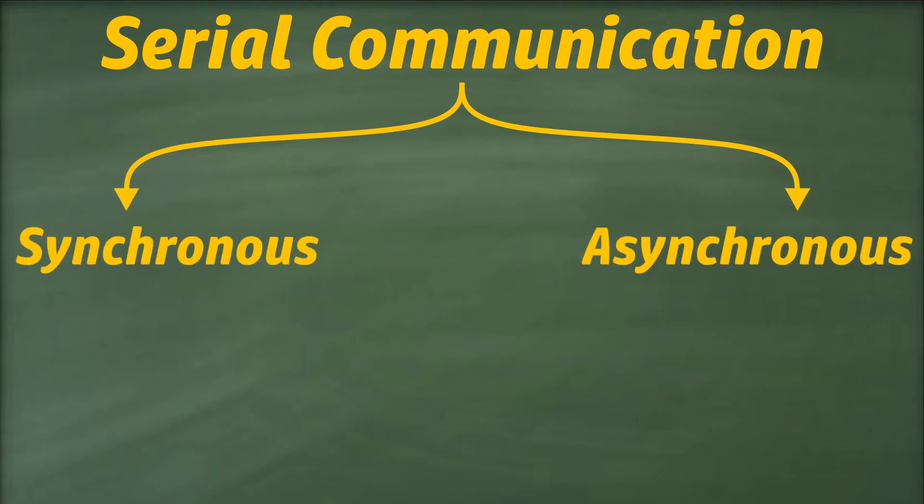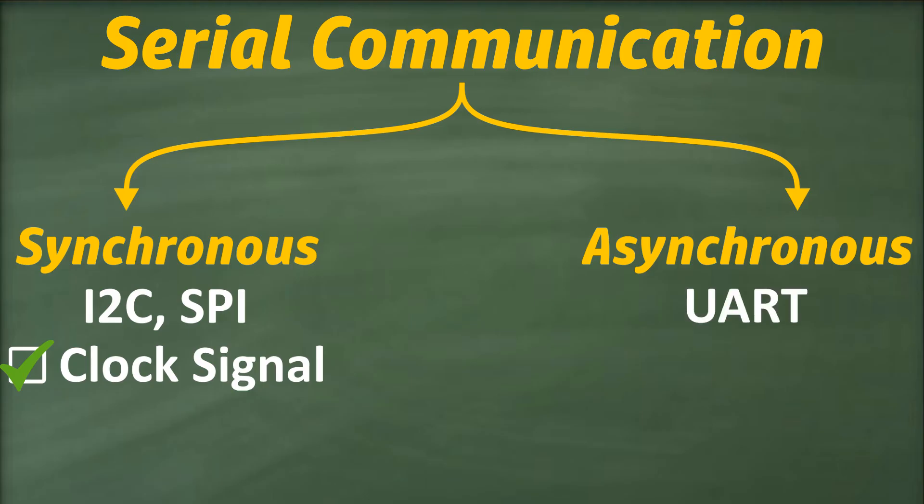In general, serial communication can be divided into two main categories: synchronous and asynchronous serial communication. In synchronous serial communication protocols, such as I2C and SPI, the clock signal plays a vital role in synchronizing transmission between the sender and the receiver. Whereas in asynchronous serial communication protocols, like UART, which is also the focus of this video, there is no role of the clock signal.